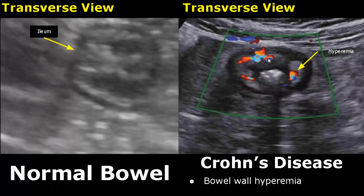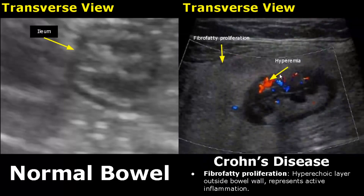On color Doppler, excess blood flow or hyperemia is found in the bowel walls. Normally, no flow will be seen in the bowel walls on color Doppler. In this image, we can see fibro-fatty proliferation, which appears as a hyperechoic layer outside the bowel wall — this is due to inflammation.